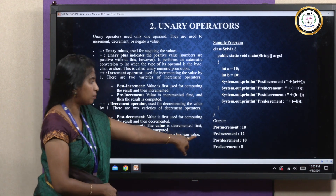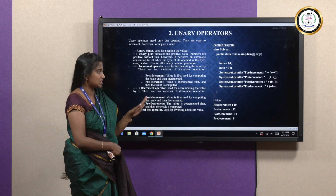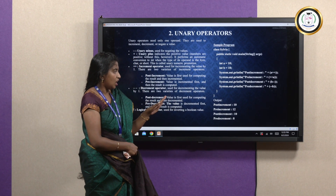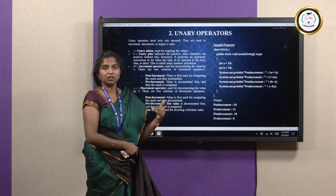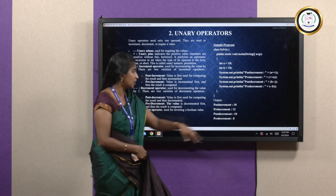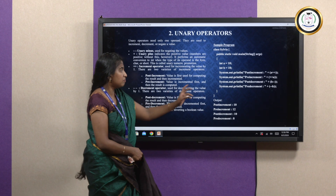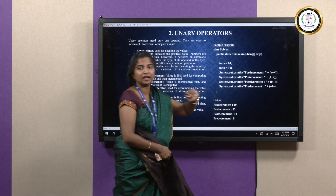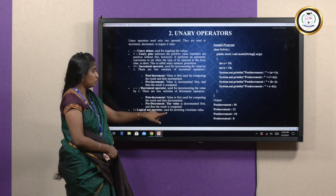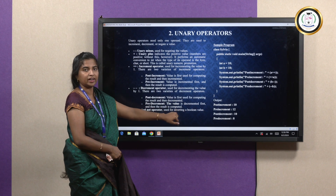Similarly for decrement, the current value of b is 10. Post decrement b-- makes it 10 minus 1 which is 9, stored in memory. Then pre decrement --b gives 9 minus 1, which is 8. So the answers are 10, 12, 10, and 8.